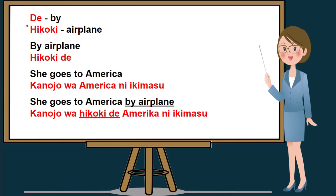Let's take another example, still by using de or by. This time, we will be using hikoki or airplane in English. If we combine them together, it will be by airplane, or in Nihongo, hikokide. Let's try to construct a sentence with hikokide.